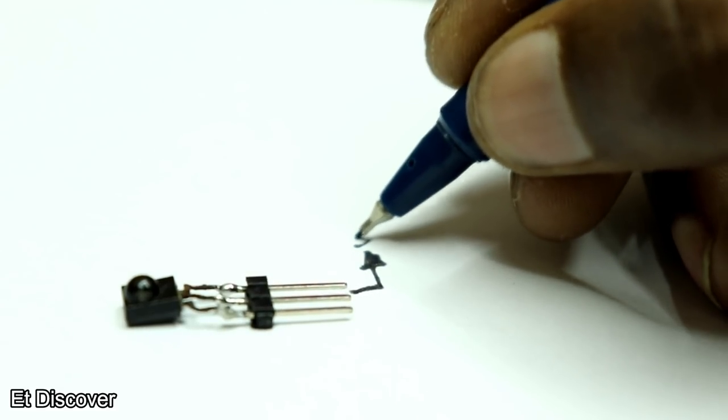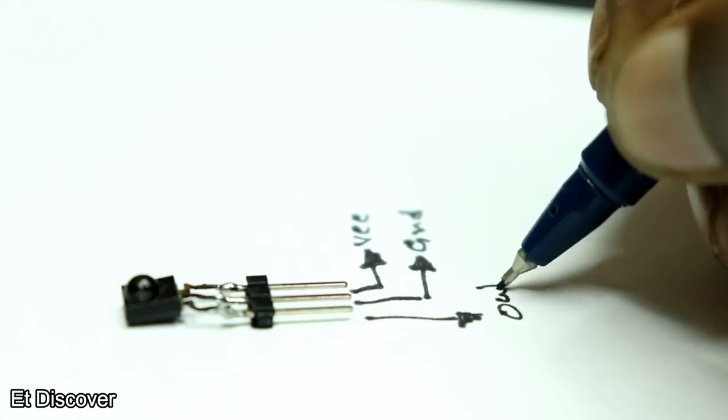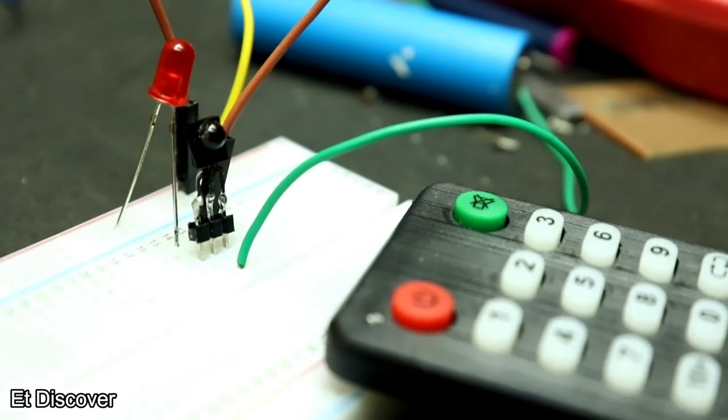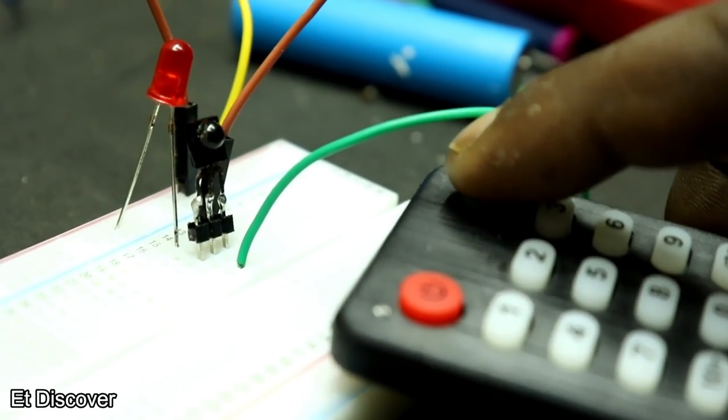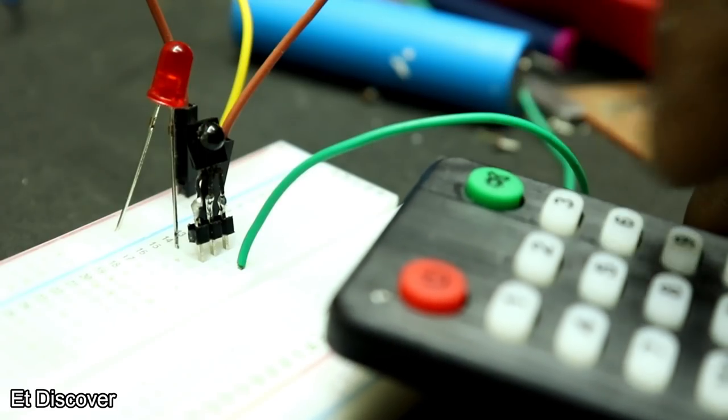There are three pins in an IR sensor, which are positive, negative, and data output. This data output works on 38 kilohertz. This is enough for my circuit.